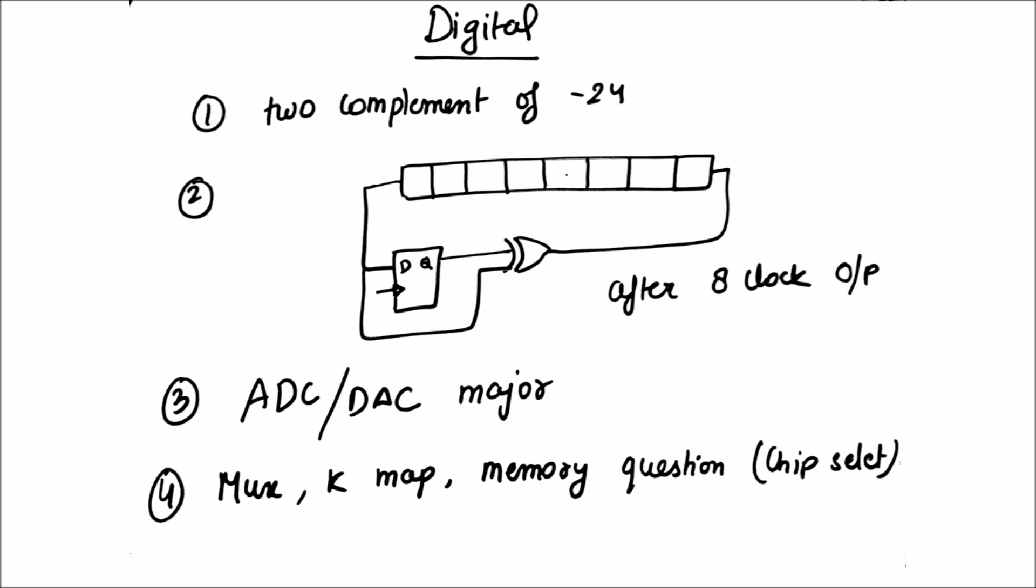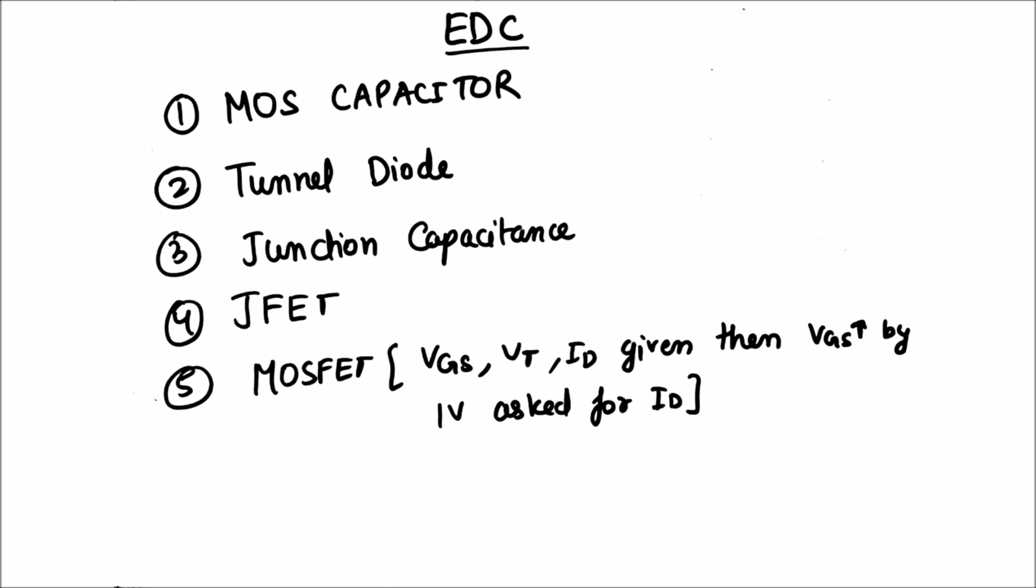Next we'll discuss EDC, in which one question was asked from MOS capacitor, one from tunnel diode, third from junction capacitance. These three were theoretical questions. One numerical was asked from JFET and one numerical was asked from MOSFET, in which VGS, VT and IT were given, and then VGS was raised by 1 volt and they asked to calculate ID. You can get an idea of this question. We are not giving the exact question.